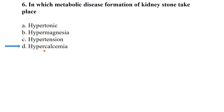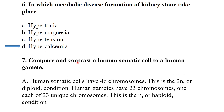Compare and contrast a human somatic cell to a human gamete cell. The best answer: human somatic cells have 46 chromosomes — this is the diploid condition. Human gametes have 23 chromosomes, one of each of 23 unique chromosomes — this is n, or haploid. Simply put, somatic cells are diploid with 46 chromosomes, while gamete cells are haploid with 23 chromosomes.